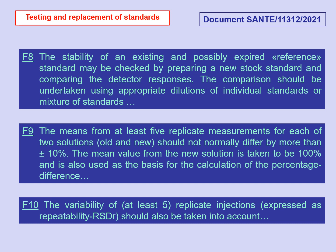The means from at least five replicate measurements for each of two solutions — old and new — should not normally differ by more than ±10%. The mean value from the new solution is taken to be 100% and is used as the basis for calculating the percentage difference. The variability of at least five replicate injections, expressed as repeatability RSDR, should also be taken into account.